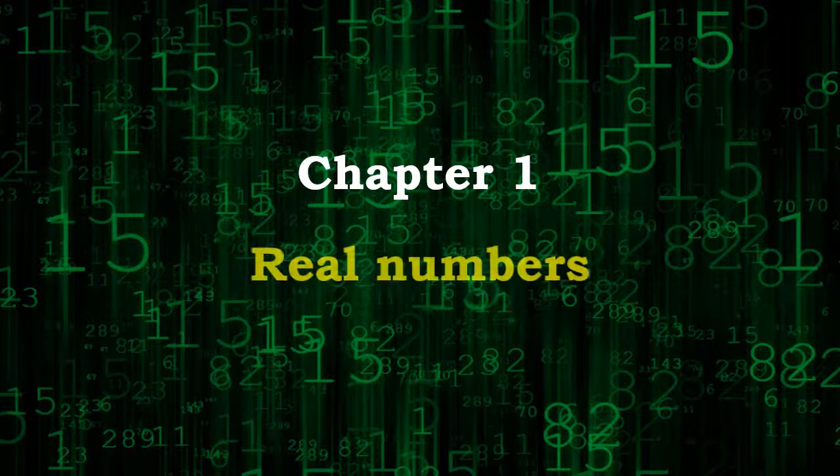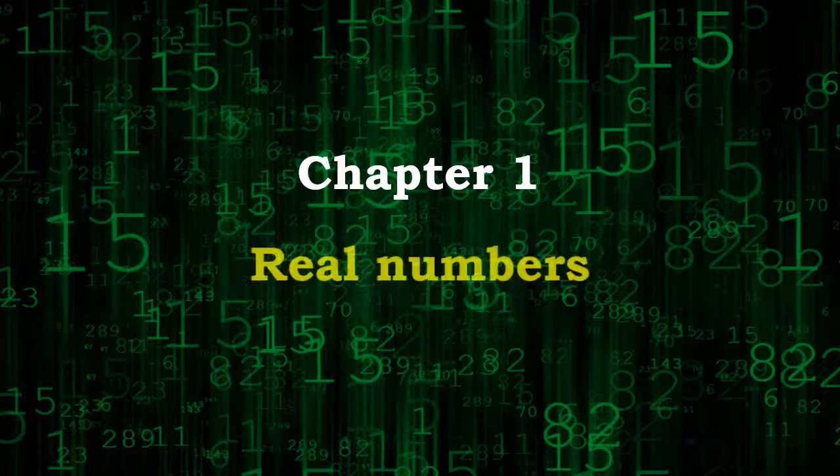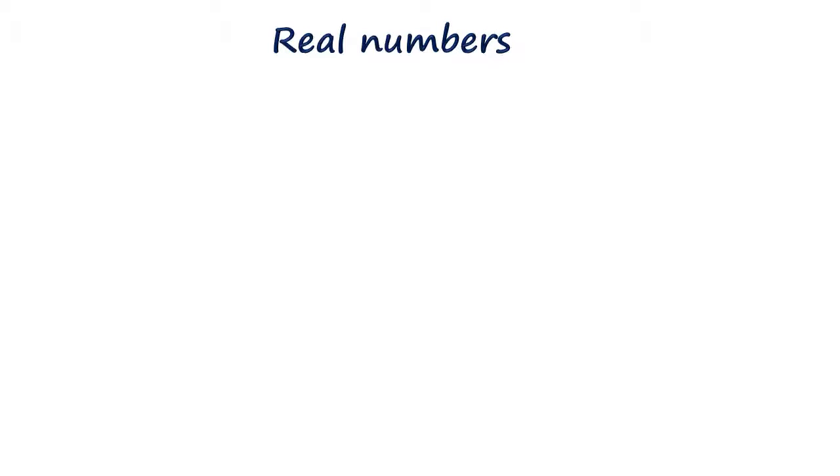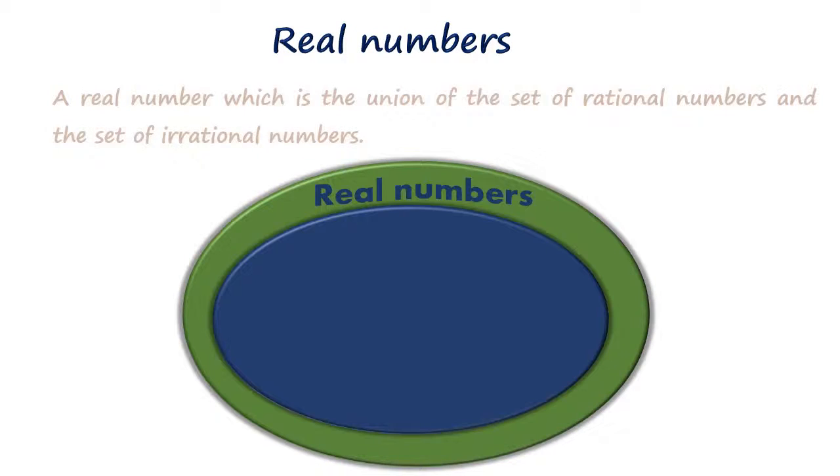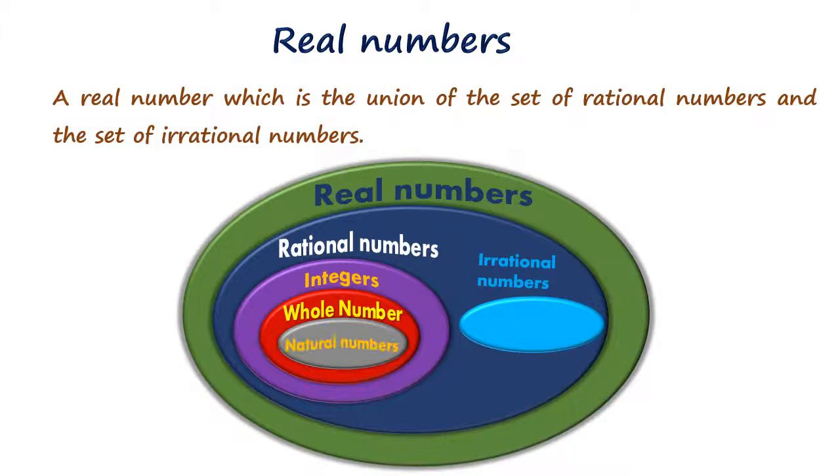Chapter 1: Real Numbers. What is a real number? A real number is the union of the set of rational numbers and the set of irrational numbers.